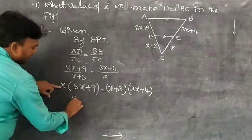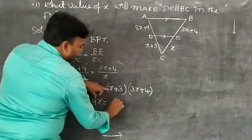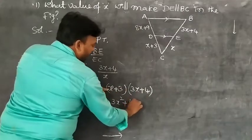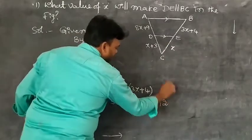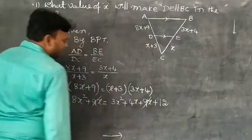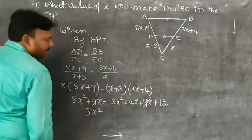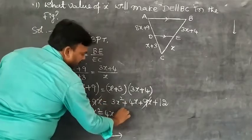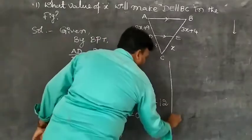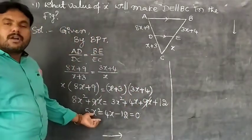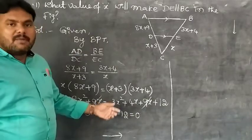Observe here: expanding the left side, X into 8X gives 8X², and X into 9 gives 9X. On the right side: X into 3X gives 3X², X into 4 gives 4X, 3 into 3X gives 9X, and 3 into 4 gives 12. So we get 8X² + 9X = 3X² + 4X + 9X + 12. On both sides, 9X and 9X get cancelled. Then 3X² transfers to the left side, giving 5X² + 4X transfers left becoming minus 4X minus 12 equal to 0. This is in the form of a quadratic equation.